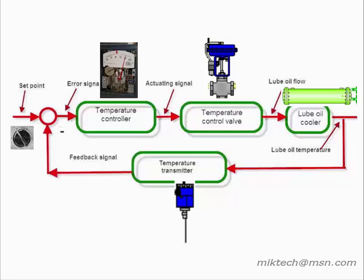For example, if the actual temperature is greater than the set point value, the controller will vary the control air signal and cause the valve to move in the open direction. This results in more lube oil flowing through the cooler and lowers the temperature of the lube oil leaving the cooler.